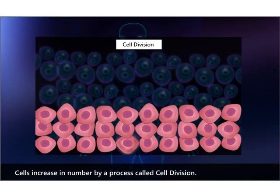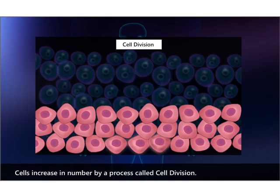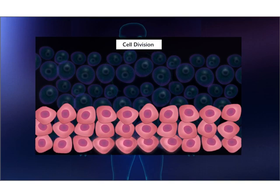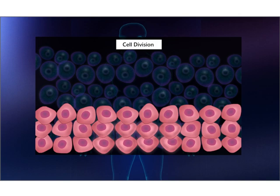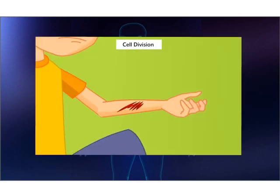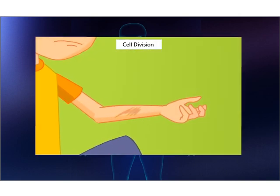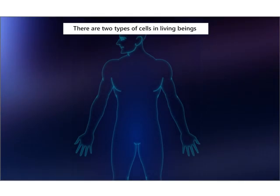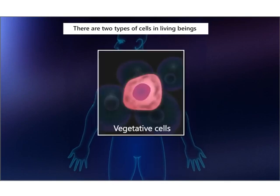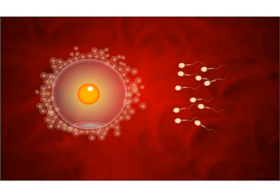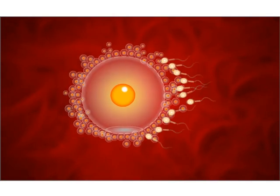Cells increase in number by a process called cell division. Every day our bodies produce millions of skin cells to replace those lost in normal activity. New cells cover any wound in our body. There are two types of cells in living beings. The cells which help in growth are the vegetative cells.